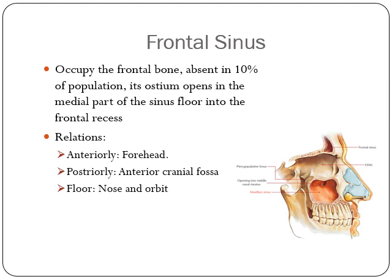The frontal sinus occupies the frontal bone and is absent in 10% of the population. Its ostium opens in the middle part of the sinus floor into the frontal recess. Relations: anteriorly the forehead; posteriorly the anterior cranial fossa; and the floor relates to the nose and orbit.